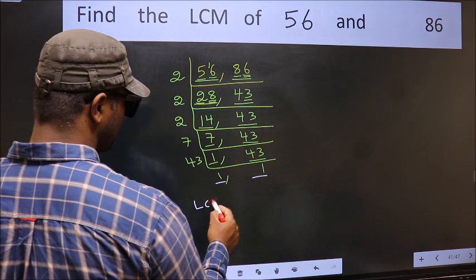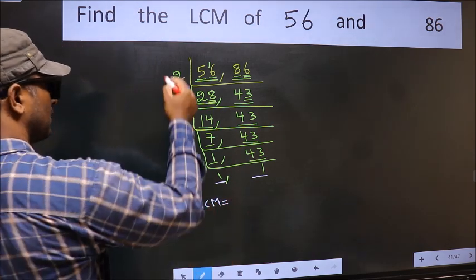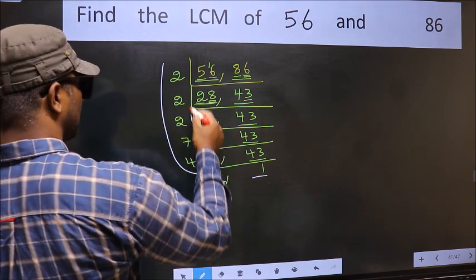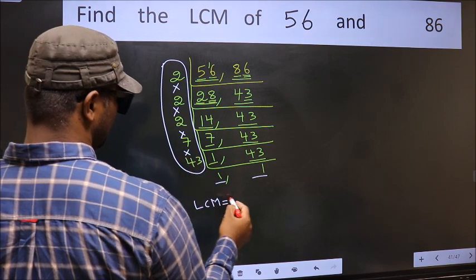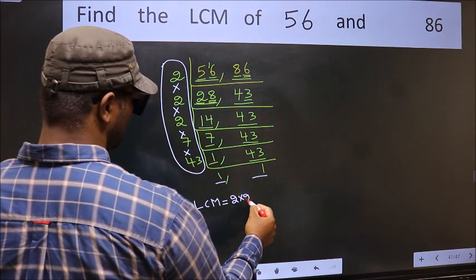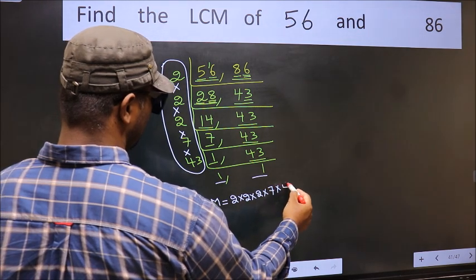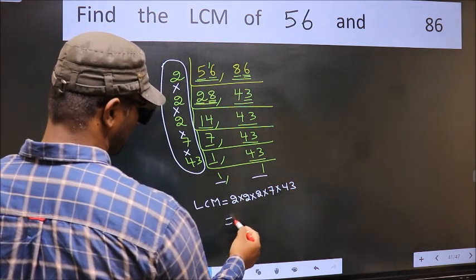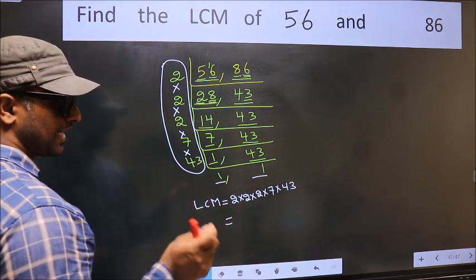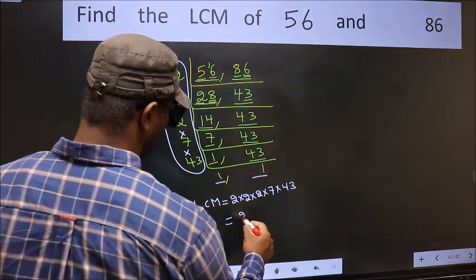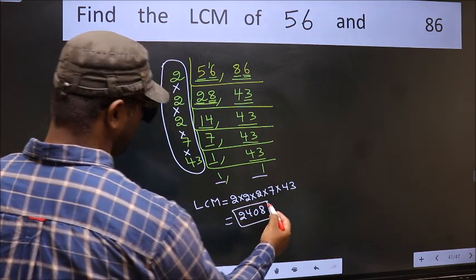So our LCM is the product of these numbers: 2 × 2 × 2 × 2 × 2 × 7 × 43. When we multiply these numbers, we get 2408 as our LCM.